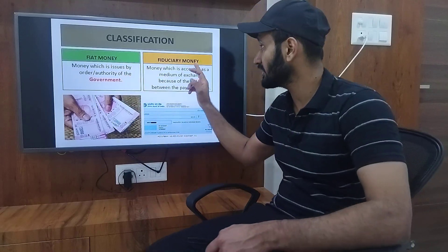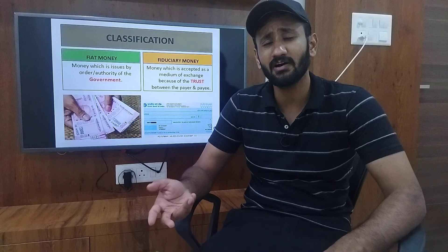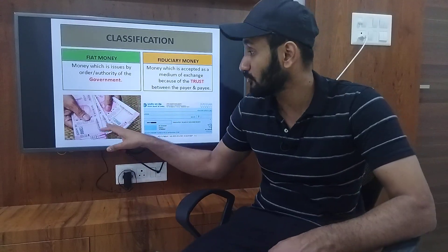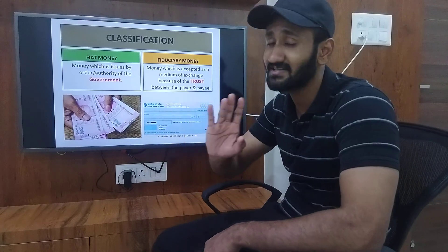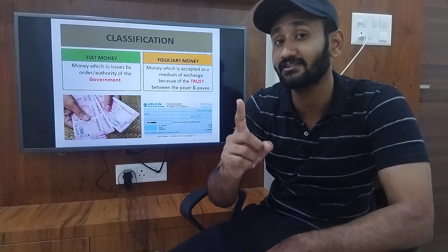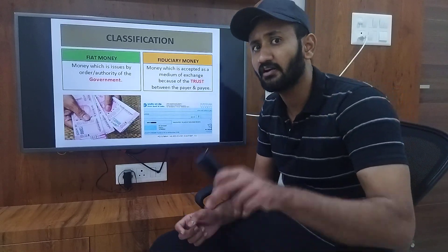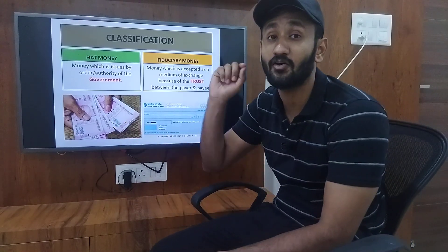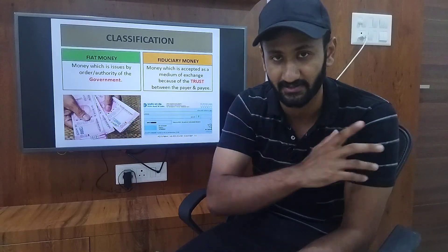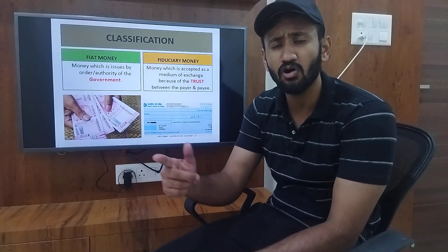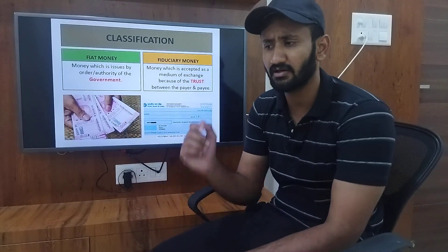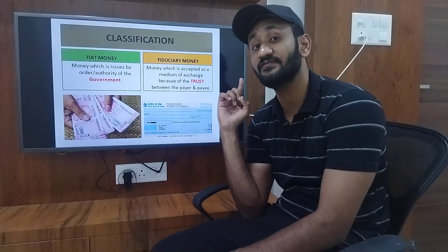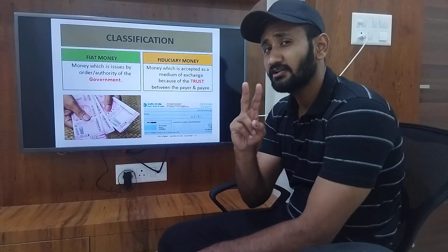This can come as a one-mark or two-mark difference question in your exam. Fiat money is the money you already understand as money — your currency notes. It is the money which is issued by the order and authority of the government. And the shopkeeper — whoever you go to for buying chocolate or anything — he is bound to accept this money because it is legally issued by the order of government. The shopkeeper cannot refuse because it is fiat money.